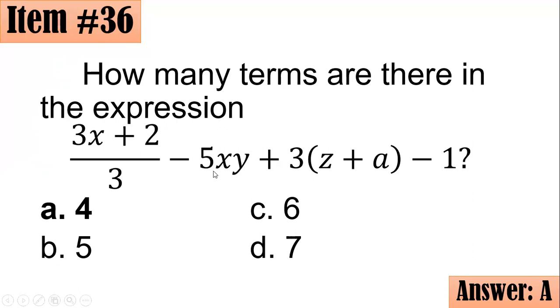If you have the product of a numerical coefficient with variables, this is also treated as one term. You might ask, sir, z plus a is one term and 3 is another term, but remember we are talking about their product, so this is also one term. And this negative one is just one term. So we have one, two, three, four terms only, letter A.